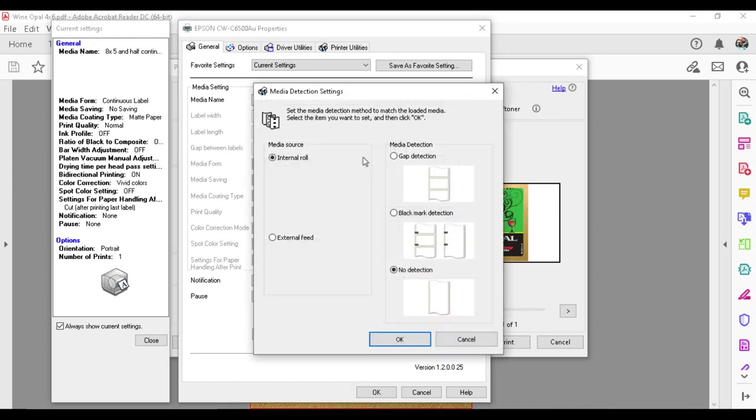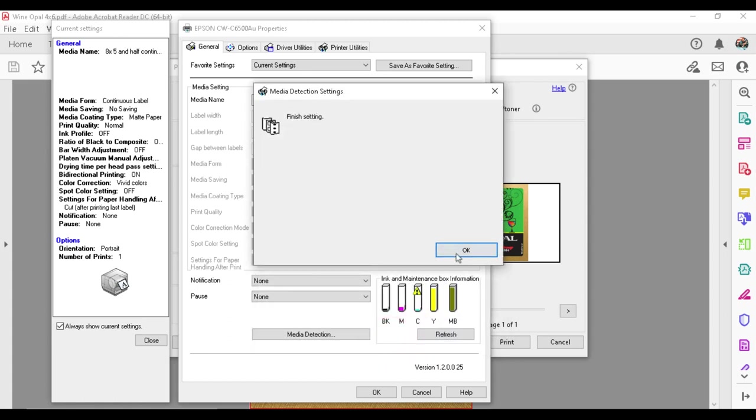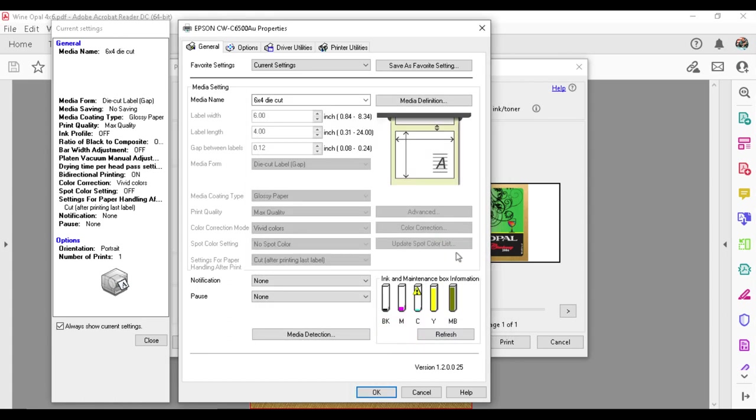And I will have to double check and I do want it to be a gap detection because these labels have gaps. That tells the label printer what you have in it. So I've already saved all the settings that I want in here. I have a glossy paper chosen with a maximum quality and vivid colors. So all those settings are defaulted now that I've created that media name as well.